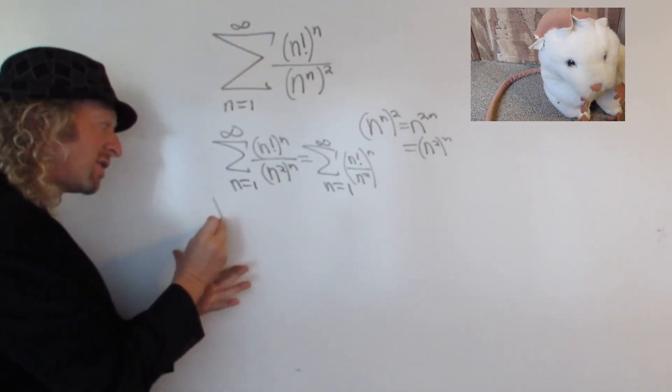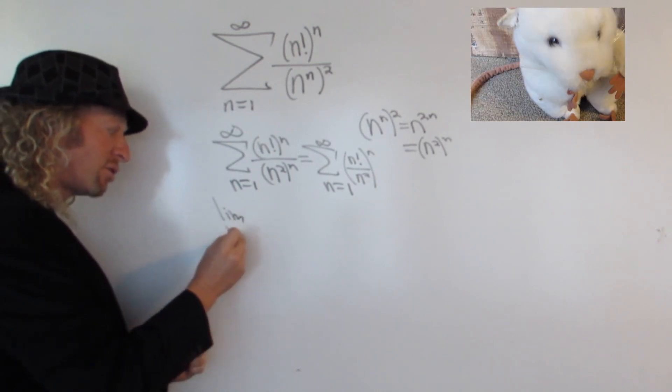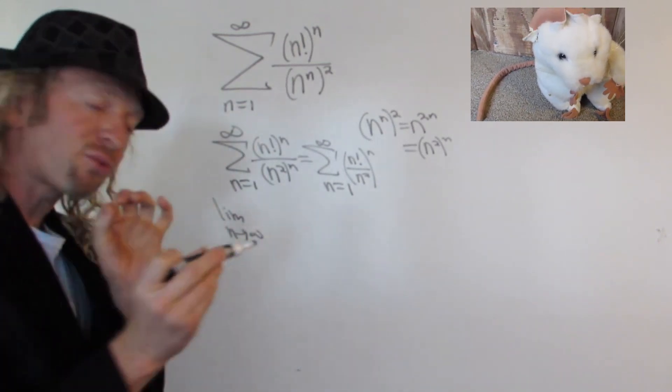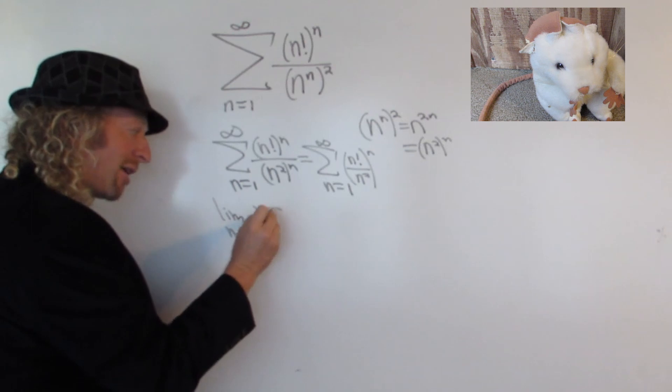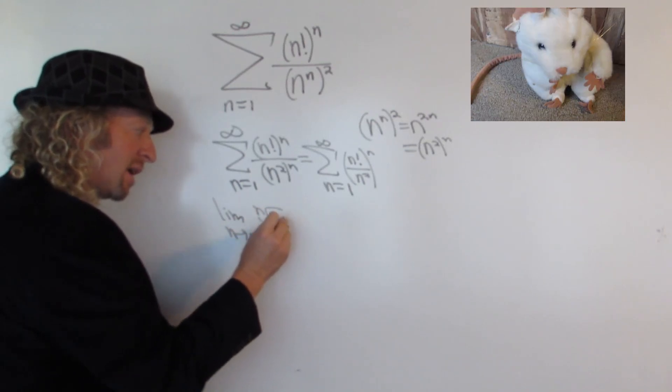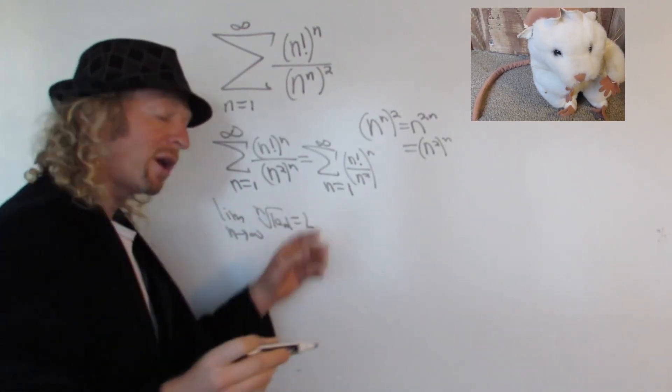The root test says if you take the limit as n goes to infinity of the nth root of the absolute value of a sub n, and you get l, one of three things can happen.